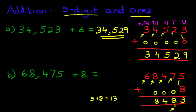And lastly, we've got six. Ten thousands. Plus zero. The answer is six. So our answer to the question is 68,483. And it really is as simple as that. Addition of five digit numbers and ones.